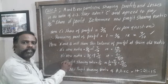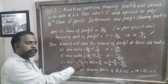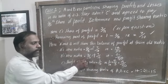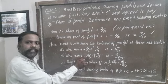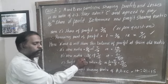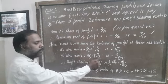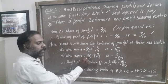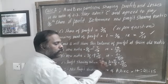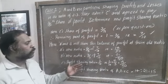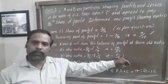Similarly, we can find B's new profit sharing ratio. B will get 3/5 of 7/10, where 3/5 is B's old profit sharing ratio. That is equal to 3 multiplied by 7, which is 21, over 5 multiplied by 10, which is 50. So B's new profit sharing ratio is 21/50.